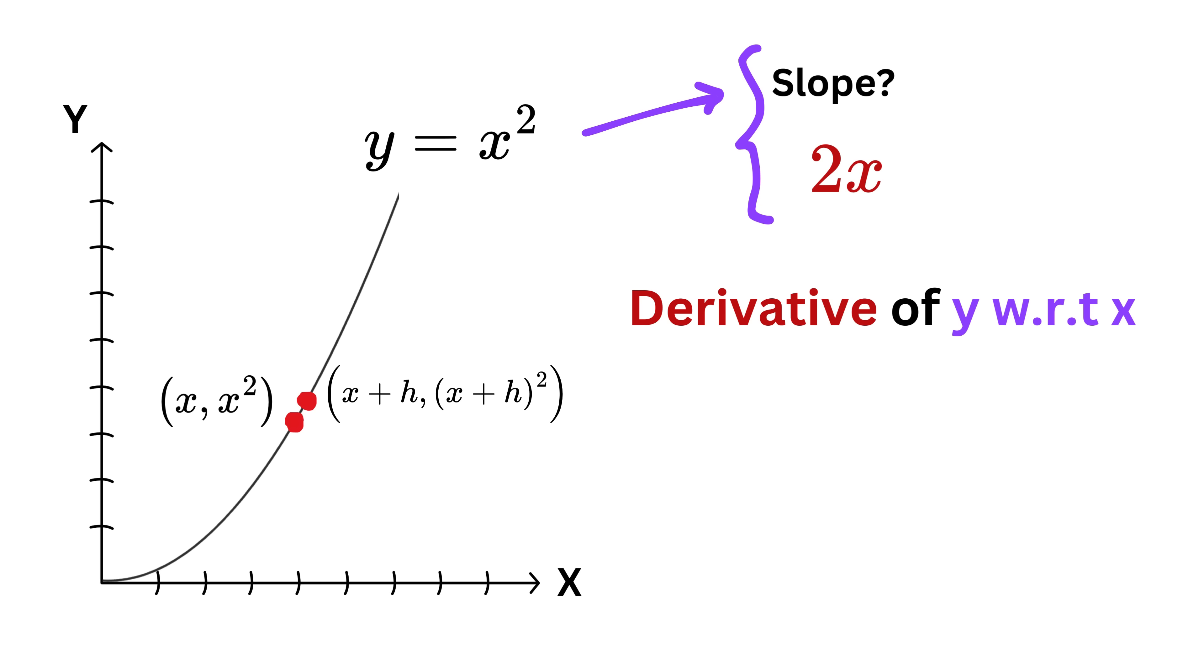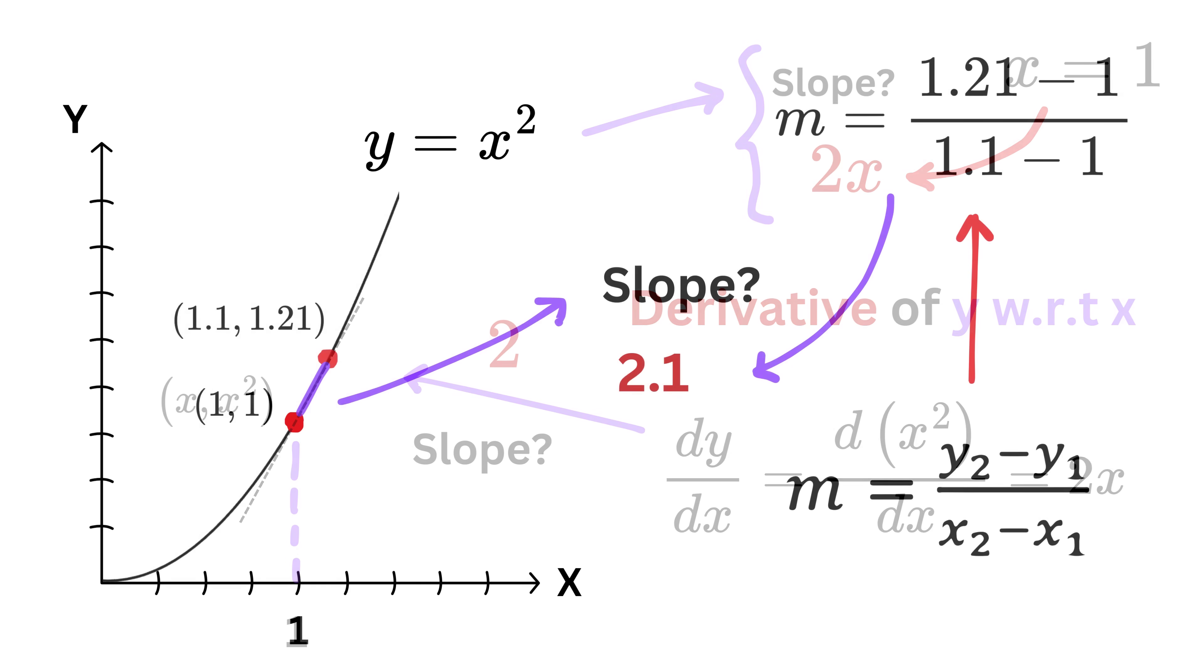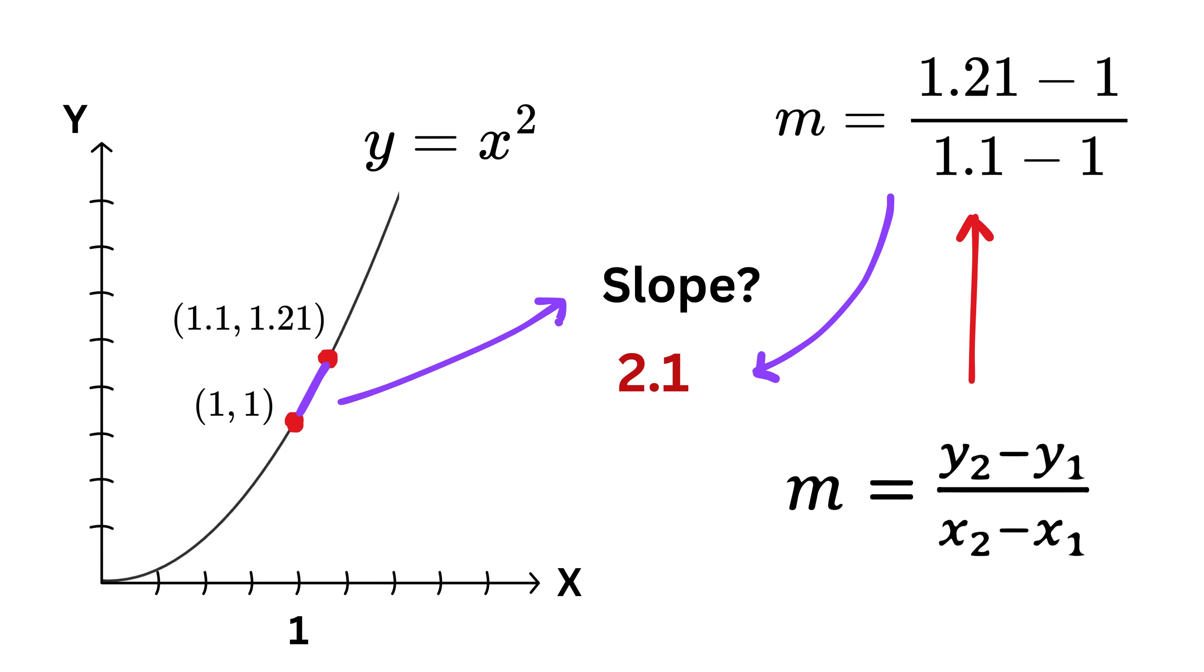So, we say that the derivative of y which is represented using dy over dx which indicates the change in y with respect to x at a given point is 2x when y equals x squared. Now, at x equals 1, what will be the derivative of y with respect to x? Or in other words, what will be the slope of this curve at x equals 1? Just substitute x as 1 here and we are done. The slope of this curve at x equals 1 is 2. We solved it previously and got our answer as 2.1, remember? Which was so close to 2, but not exactly 2 because the value of h was 0.1, which although small was not very close to 0.